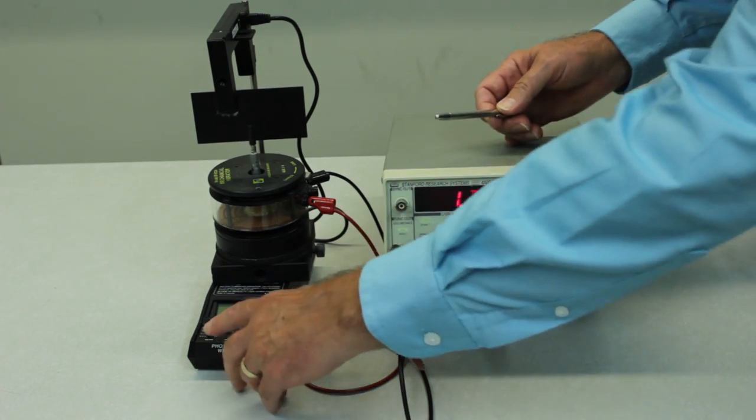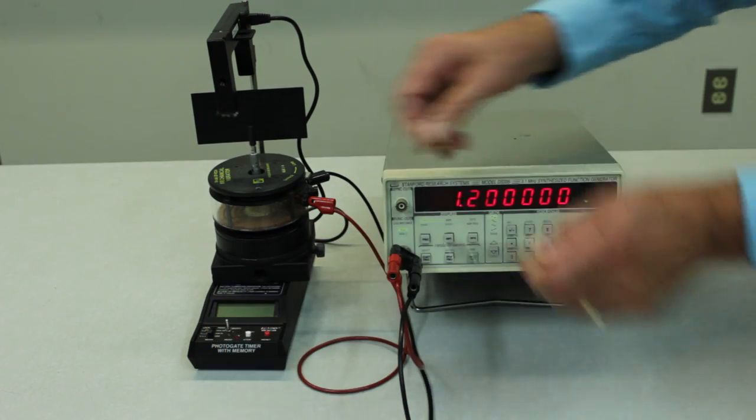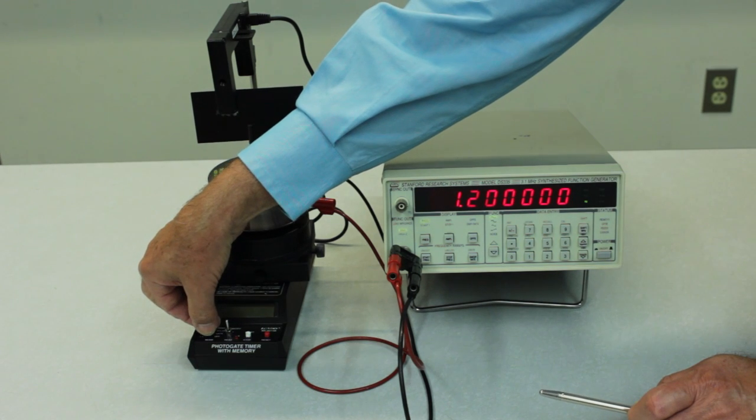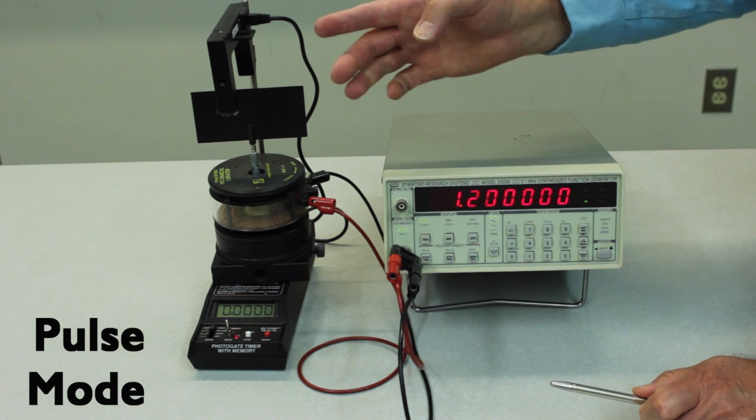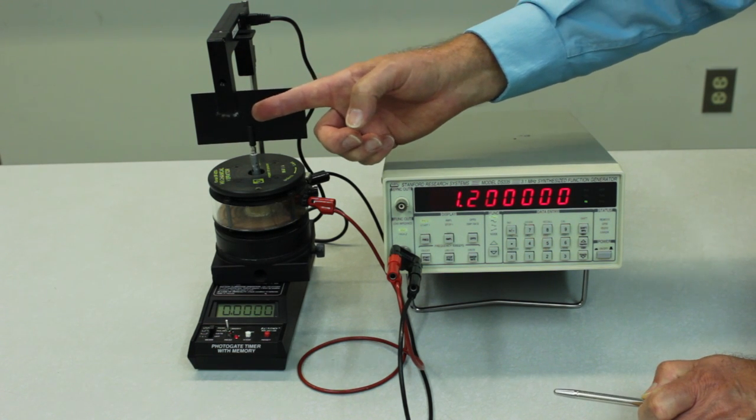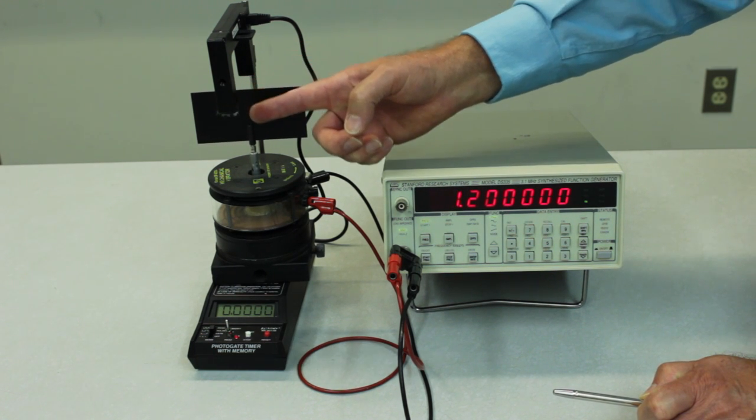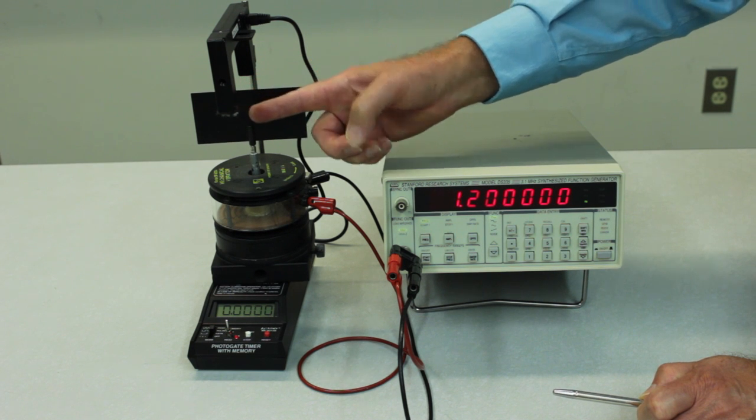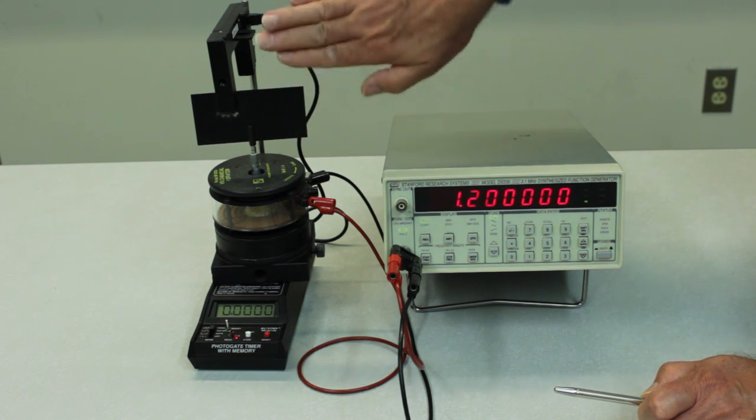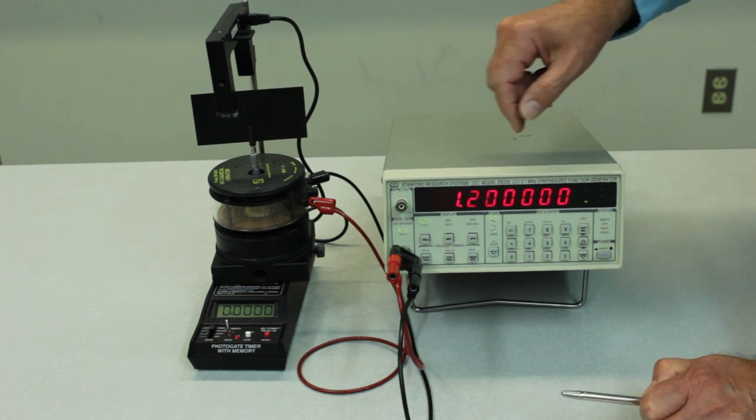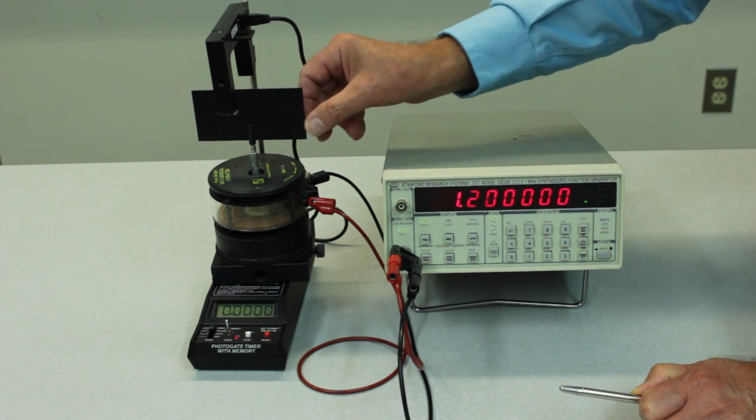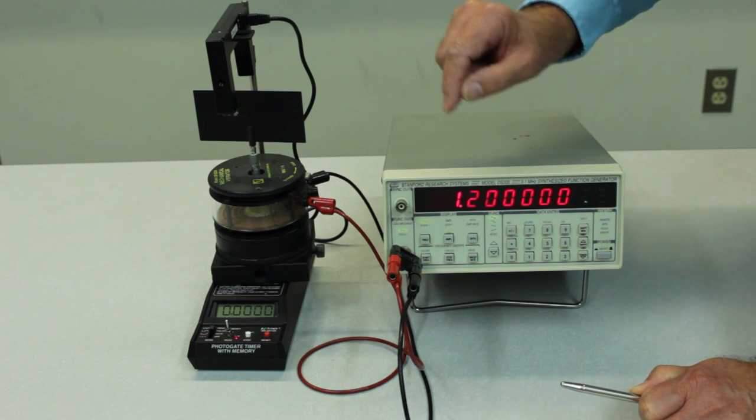So the next part of the procedure is to be sure that this oscillating flag is moving with enough amplitude to trigger the device. So let's turn on the function generator. And this time what we want to use, we set this to the pulse mode. What that will do is to trigger the timer on the first interruption and stop on the second interruption.